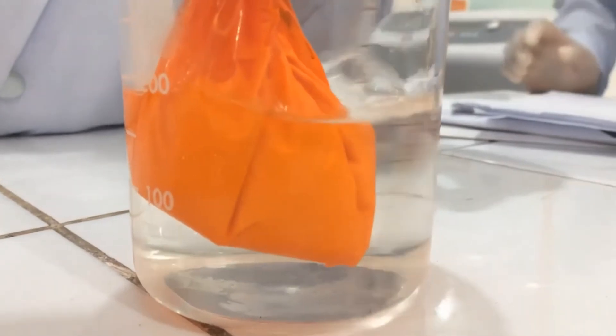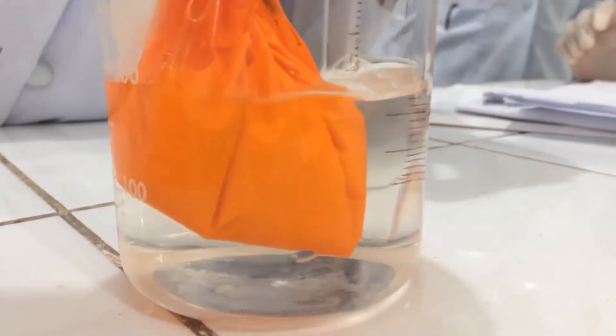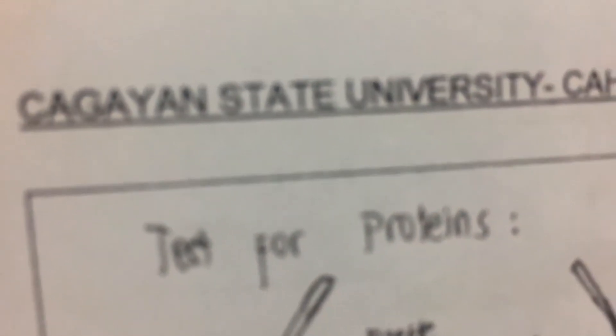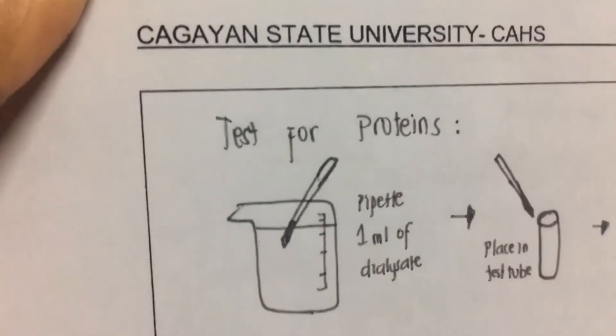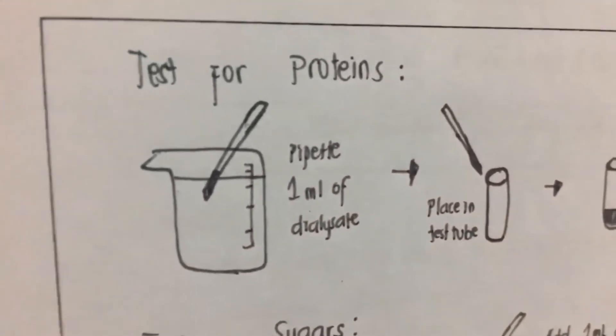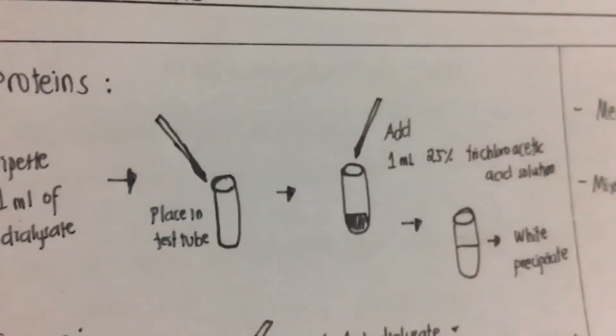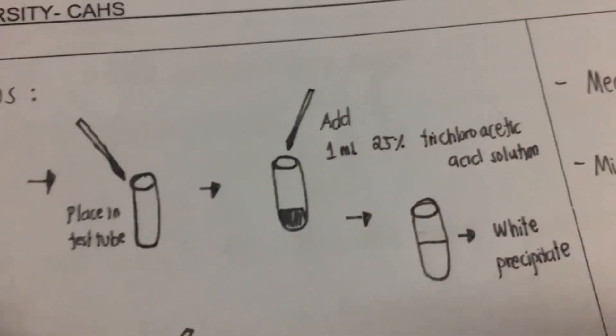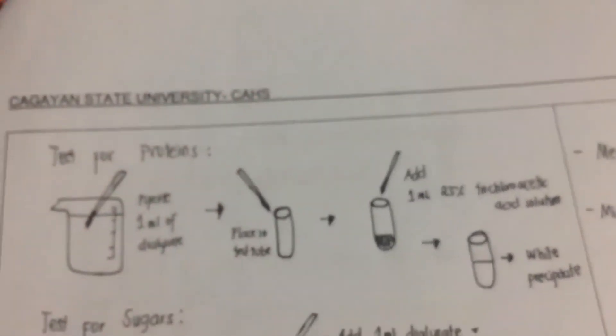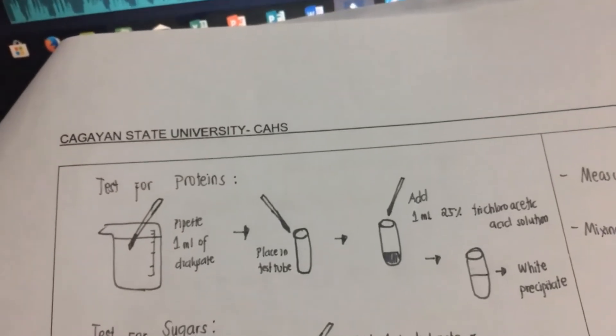After one hour, collect the dialysate. Let us test for the presence of proteins and sugar in the dialysate. For protein testing, pipet 1 ml of the dialysate and place it in a test tube. Then add 1 ml of 25% trichloroacetic acid solution. The presence of white precipitate or turbidity will indicate that proteins are present.